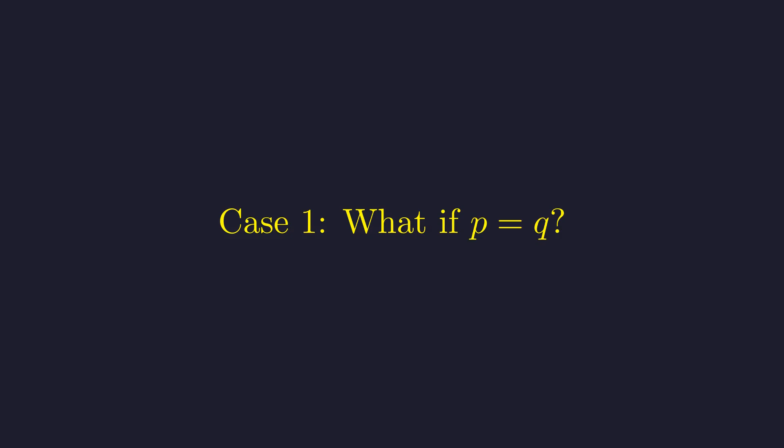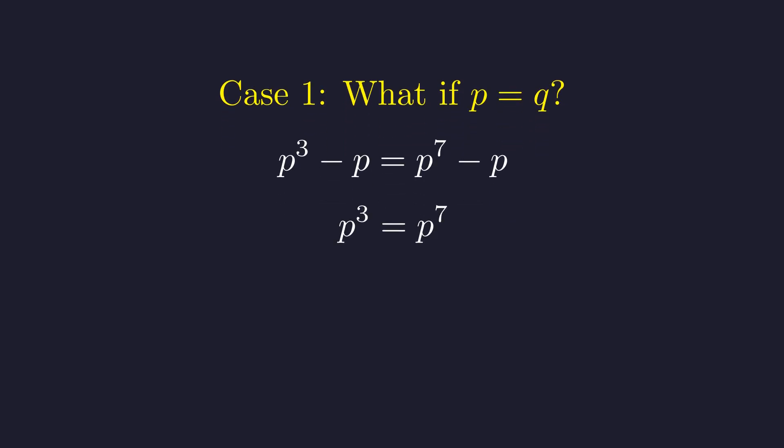First, let's consider the trivial case where p equals q. If p equals q, we substitute p for q. The minus p terms on both sides cancel. This leaves p cubed equals p to the 7th. Because p is a prime number and therefore non-zero, we can divide both sides by p cubed.